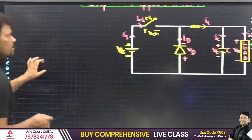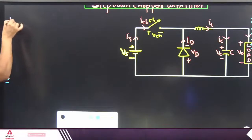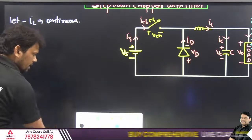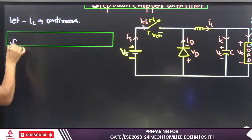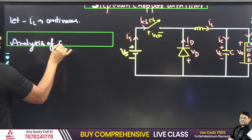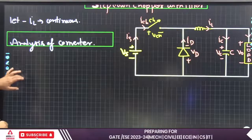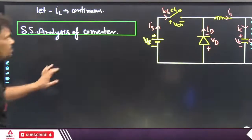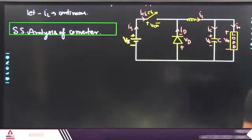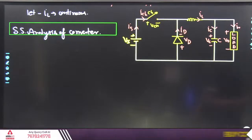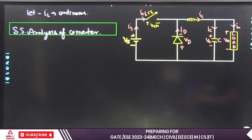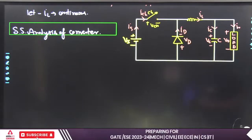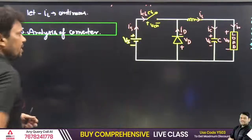Now let us take up Case 1. Let IL be continuous — that is our assumption. We will start with the steady-state analysis of the converter in different intervals. We are doing steady-state analysis because we don't want to consider transients.